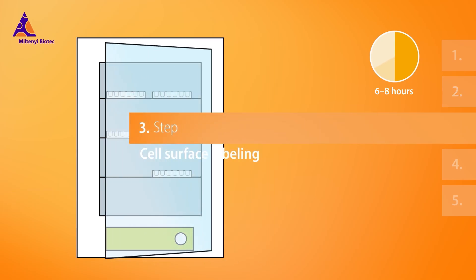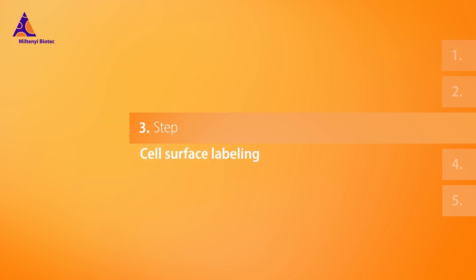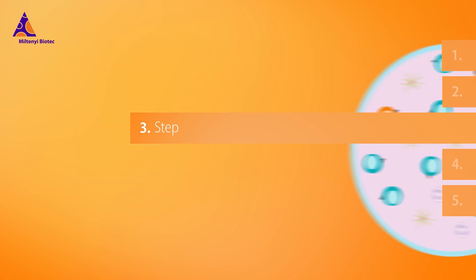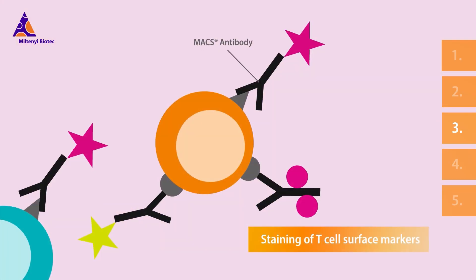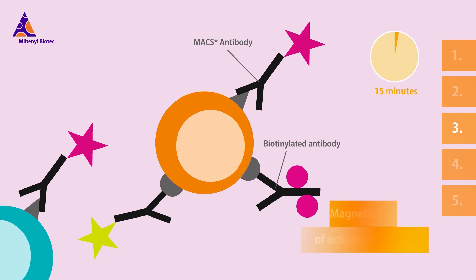Next, label specific cell surface markers. Use MAX antibodies to stain your markers of interest — they're optimal for staining even the rarest cells. Also include the primary antibody for magnetic enrichment.